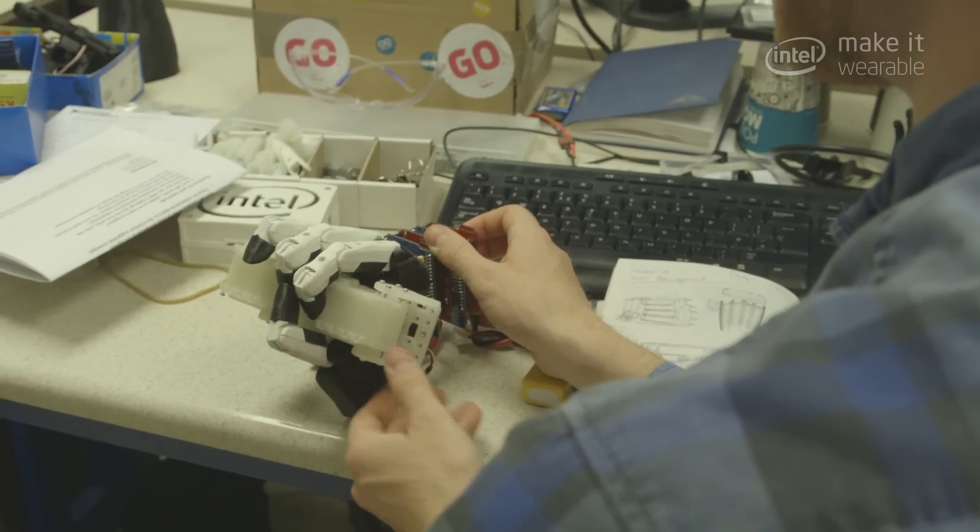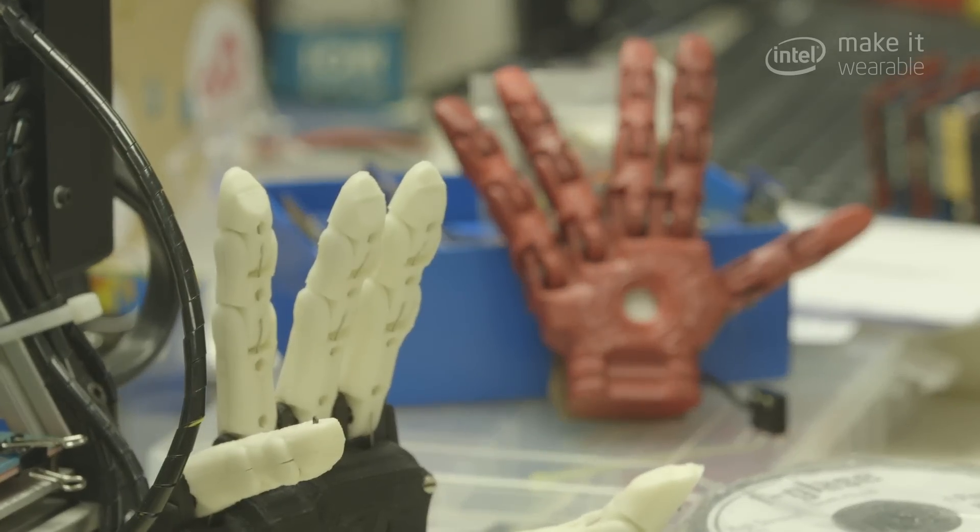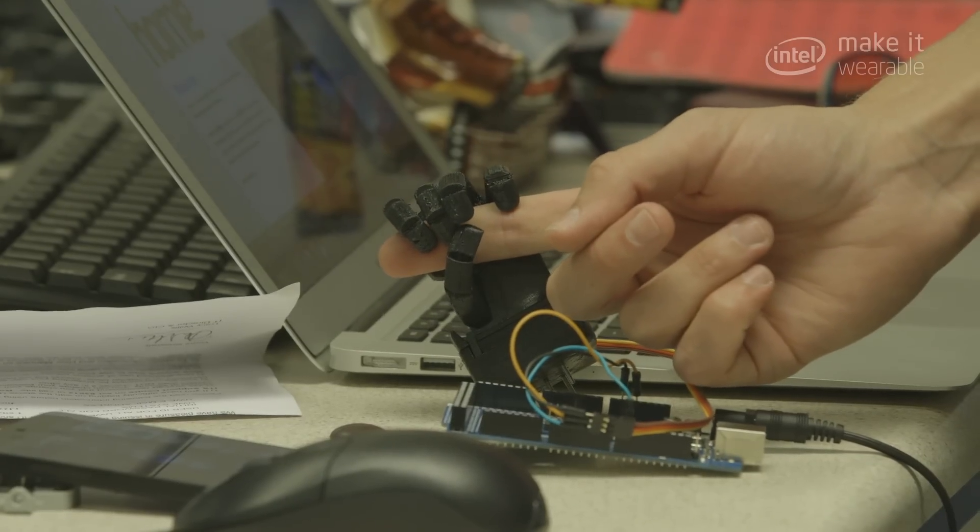It has tendons just like your human hand and then a rubber surface to act like the skin, and actuators pull the tendons which make the fingers move.